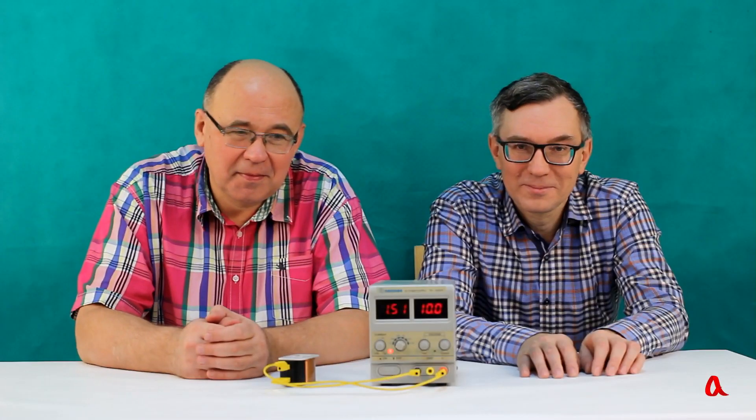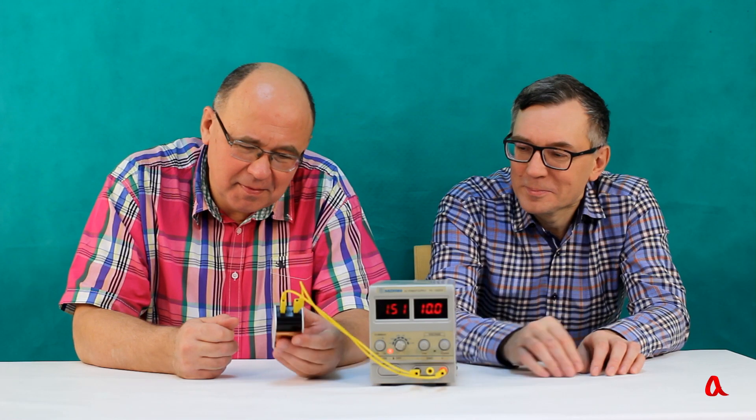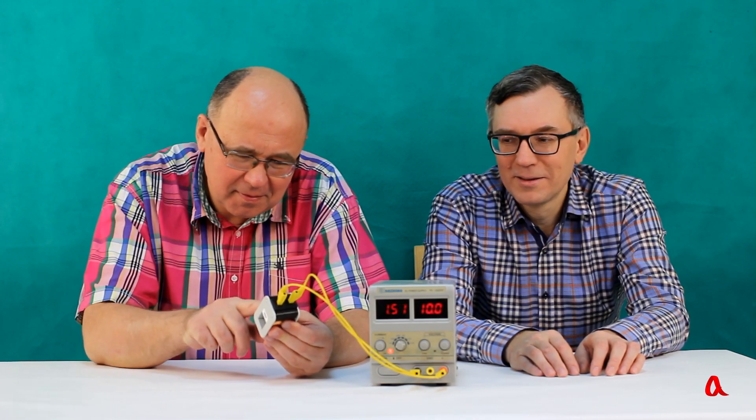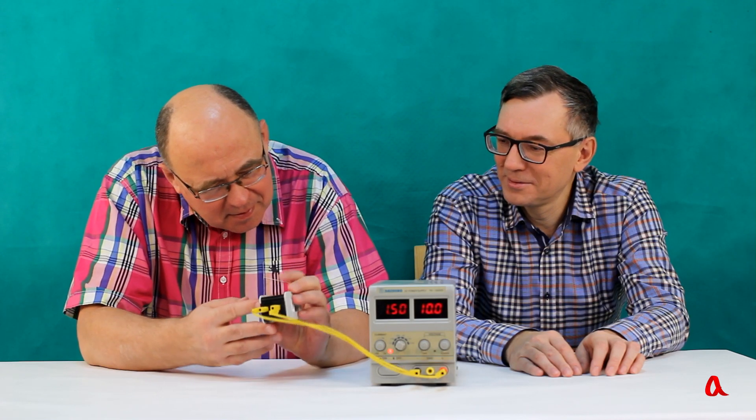By the way, if you set the source voltage to 10 volts and wait for a few minutes, the current flowing through the coil will decrease slightly, which means its resistance will increase.